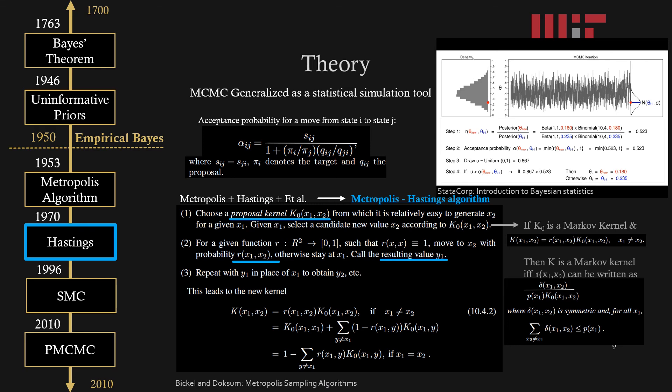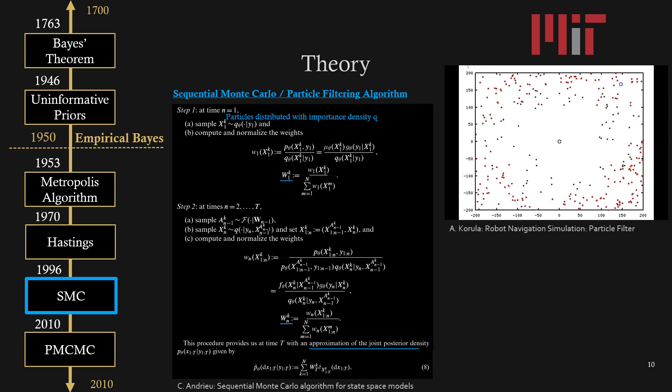Sequential Monte Carlo or particle filtering was introduced rigorously around 1996, and it occurs in two steps. In the first step, the probability of x1 given y1 is approximated using importance sampling. Then in the next step, an approximate joint posterior is constructed using the normalized weights. As you can see on the right hand side, there is a video of this particular filtering algorithm used for robotic navigation.